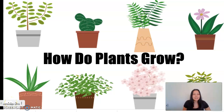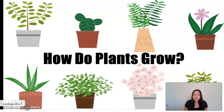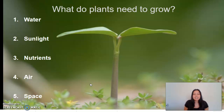Hello second graders! Today we are going to be talking about plants — what they need for survival, which means what they need to live and grow, and the different plant parts. Can anyone think of one thing that a plant needs to survive? If you guessed water or sunlight, you are correct! Plants, like all living organisms, have basic needs. These five basic needs are: number one, water; number two, sunlight; number three, nutrients; number four, air; and number five, space.